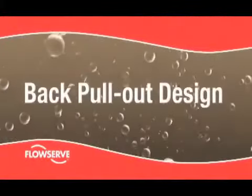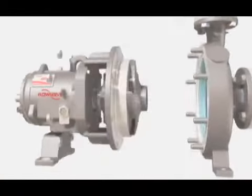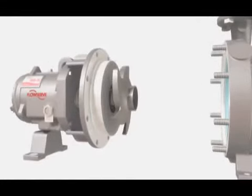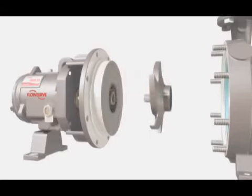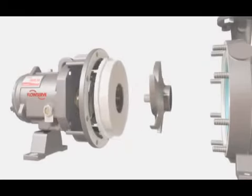Back pull-out design. The FlowServe Durco Mark III features a true back pull-out design. The casing remains in line, bolted to the suction and discharge piping. The remainder of the pump can be removed for repair or maintenance without breaking piping connections.